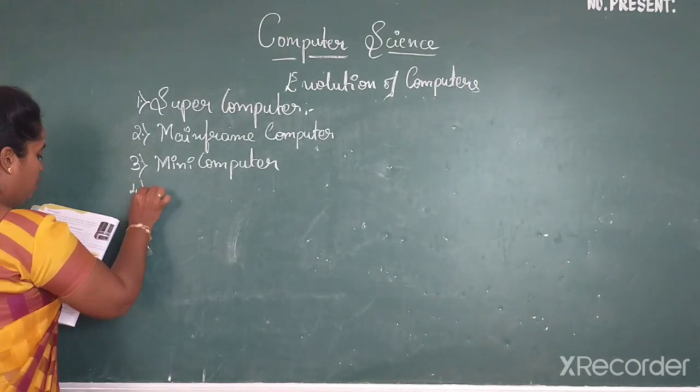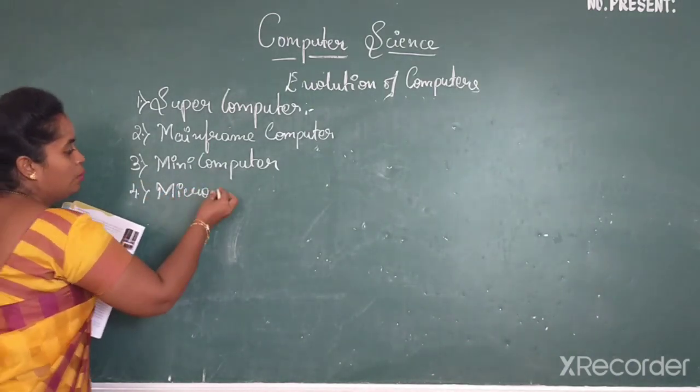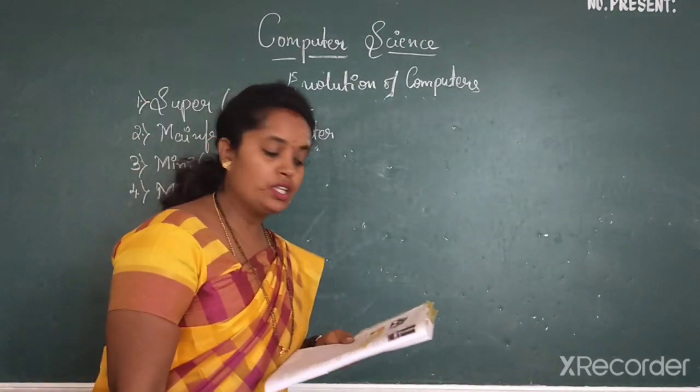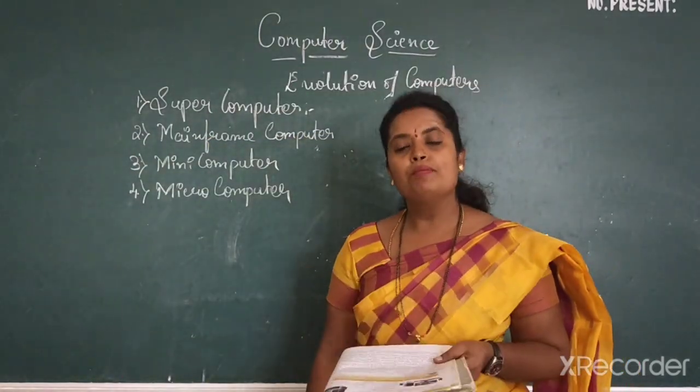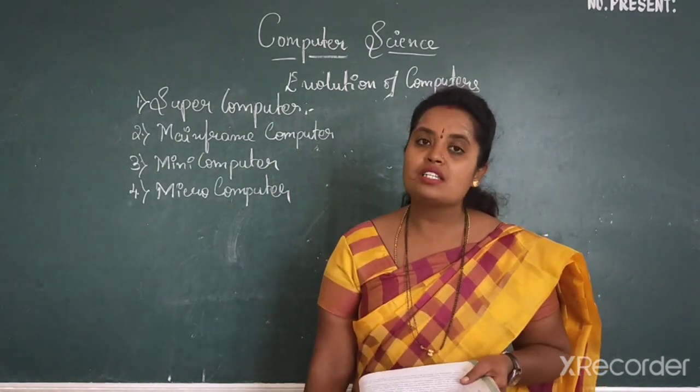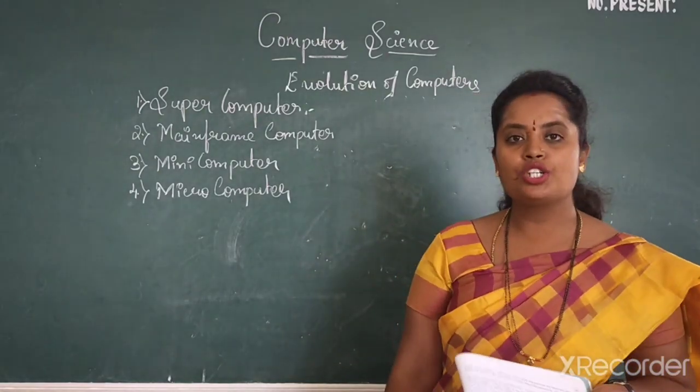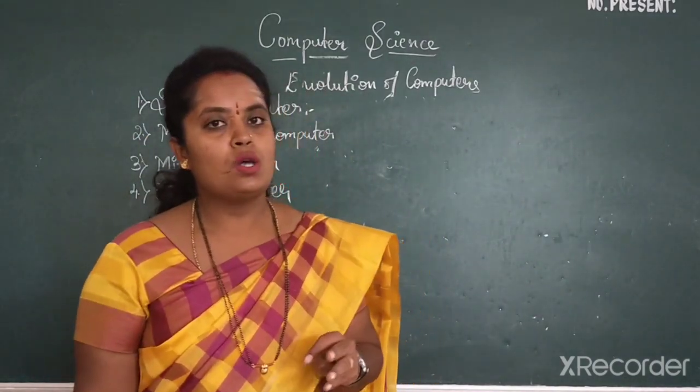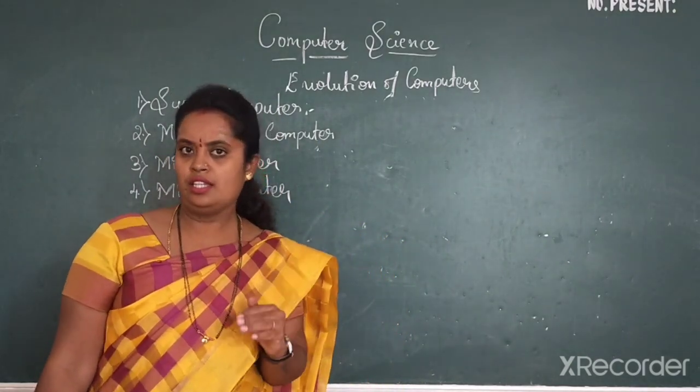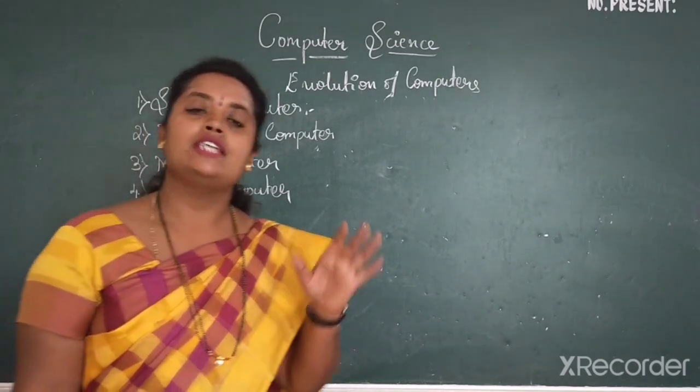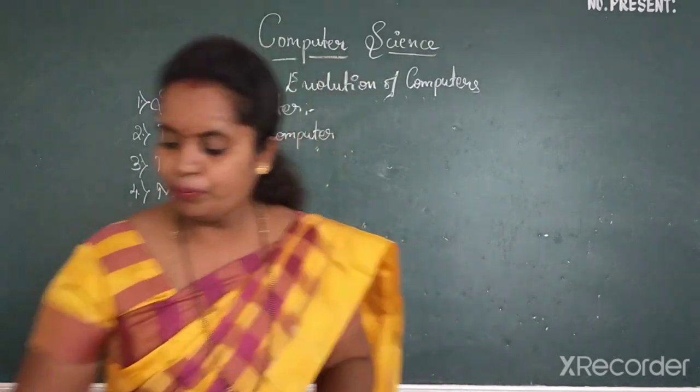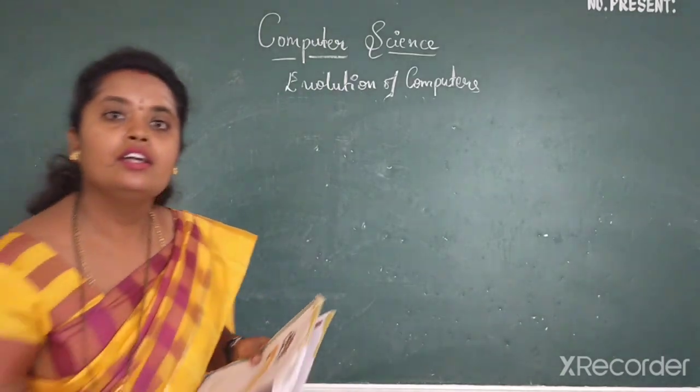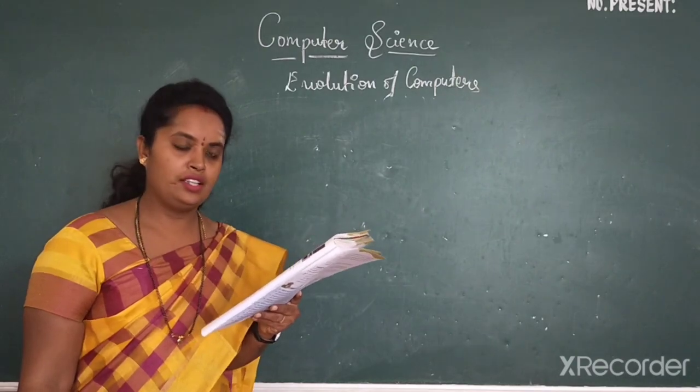Then last but not least, micro-computers. Micro-computer is the least expensive of all the computers. It is smaller in size than the mini-computer. It is usually used as personal computer or what you call as PC. So now you understood the evolution of computers, generation of computers, types of computers. After understanding all these things, we will be seeing what are the advantages and disadvantages of computers.